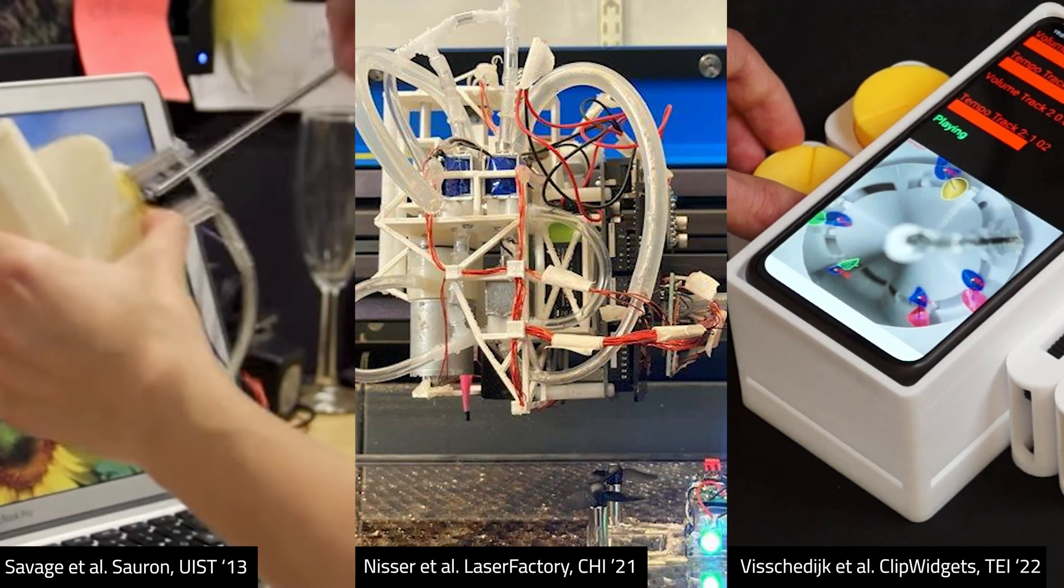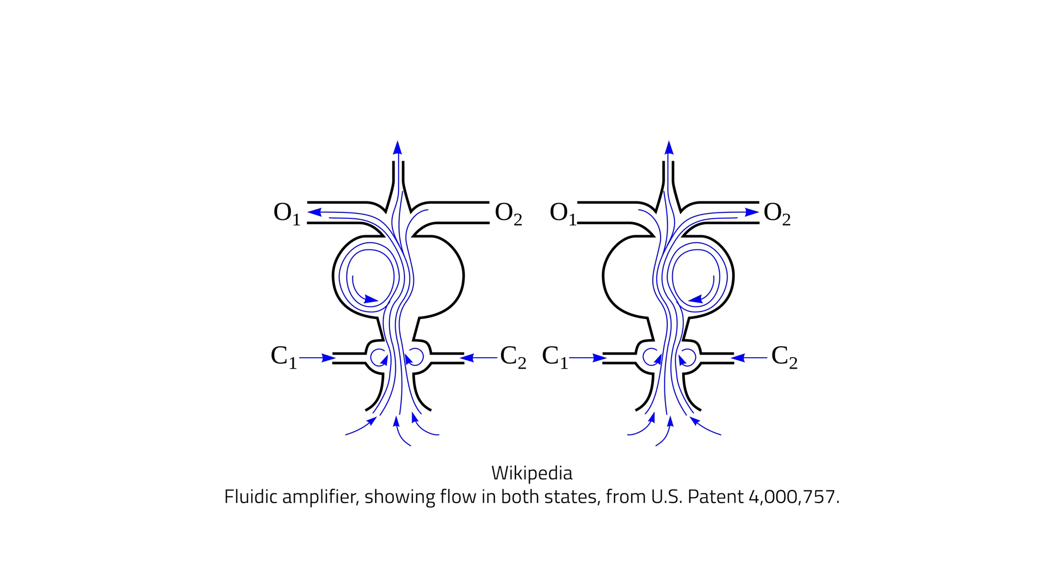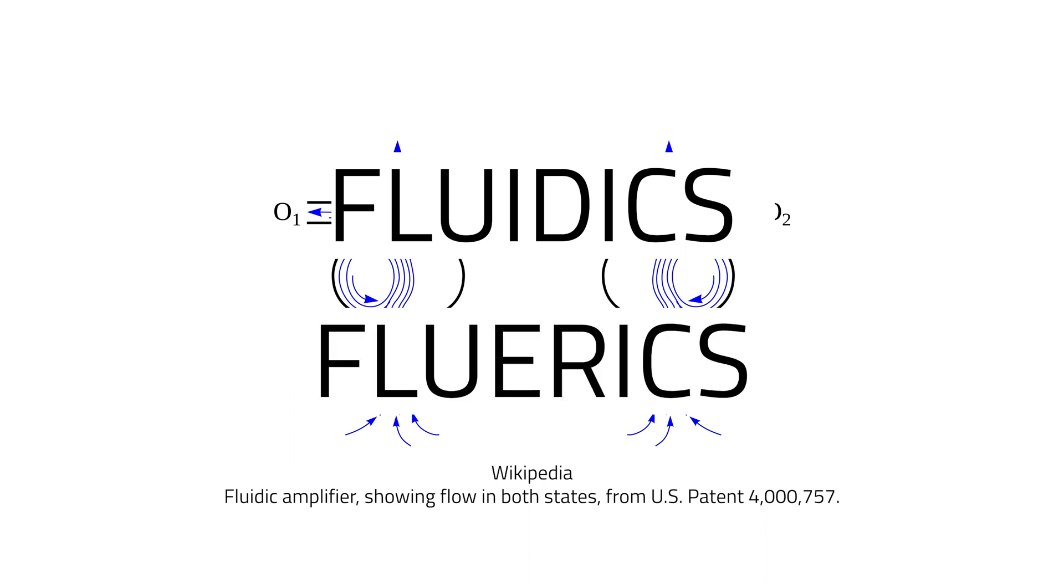Fabricating interactive objects often requires embedding or printing electronic circuitry, or programming external sensors to sense interactions. However, from the 1960s to the 1980s, researchers developed computation based on jets of air interacting with physical structures or each other. This area was called fluidics or fluerics.